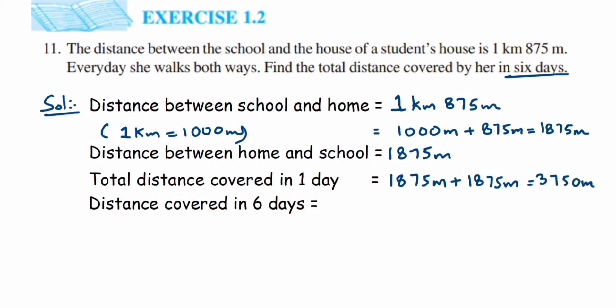So this will be equal to 6 multiplied by 3750 meter. So let's multiply this. So 3750 multiplied by 6. So 6 times 0 is 0, 6 times 5 is 30, 6 times 7 is 42 plus 3 is 45, then 6 times 3 is 18, 18 plus 4 is 22. So 22,500 is the answer. So this is equal to 22,500 meter.